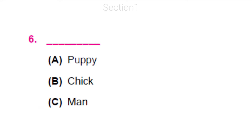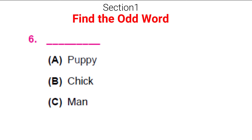How about question 6? Puppy, chick and man — what is the odd one? Well, here puppy and chick are baby types of dog and hen, but man is a grown-up. So he is the odd one.